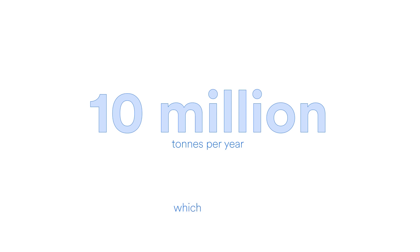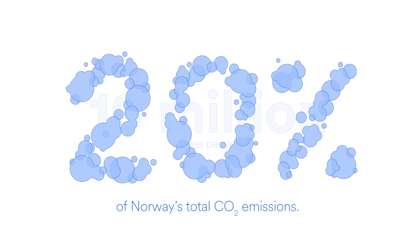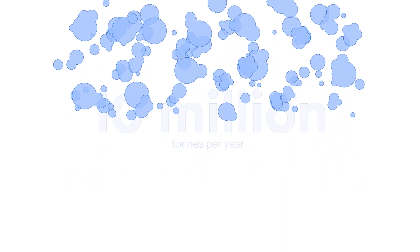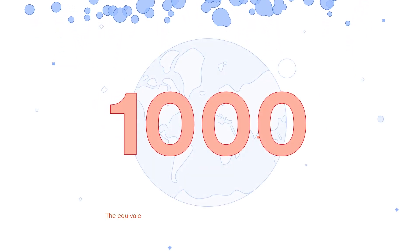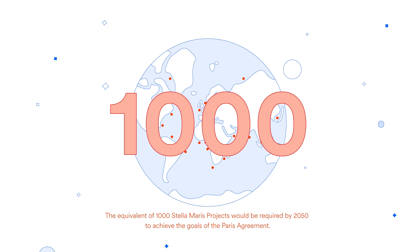Yes, it is a large number. To put it into context, it equals 20% of Norway's total CO2 emissions. In order to achieve the goal of the Paris Agreement, the equivalent of 1,000 Stellameris projects would be required by 2050.